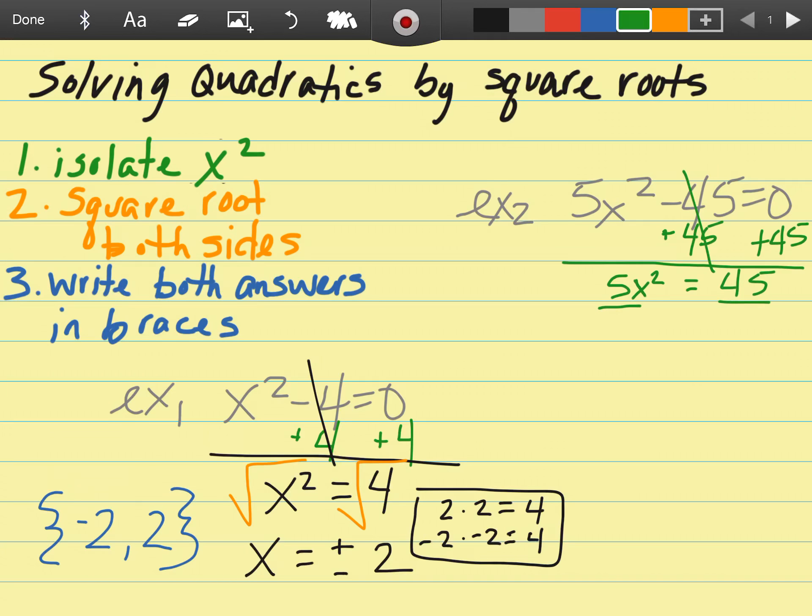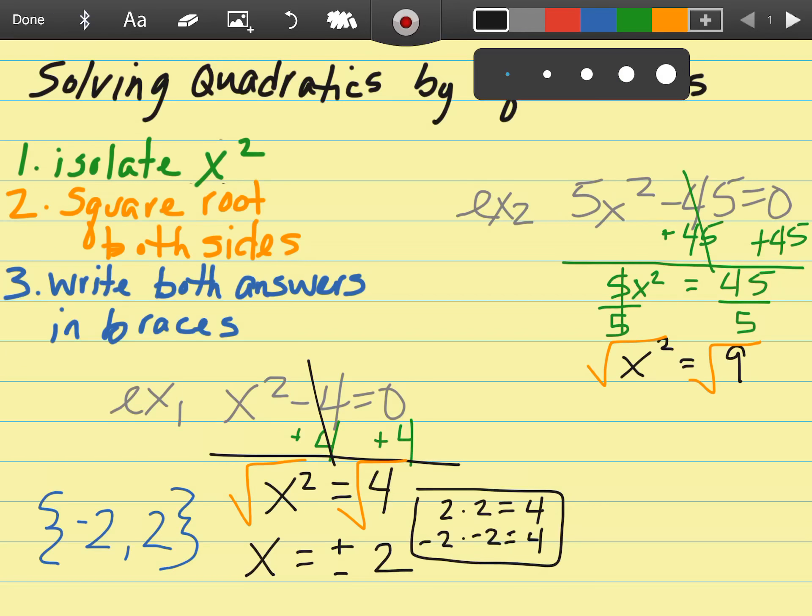I'm not quite finished yet. The x squared is being multiplied by this 5, so the inverse will be to divide by 5. X squared comes down and 45 divided by 5 is 9. Now I'm ready for step 2: let's square root both sides.